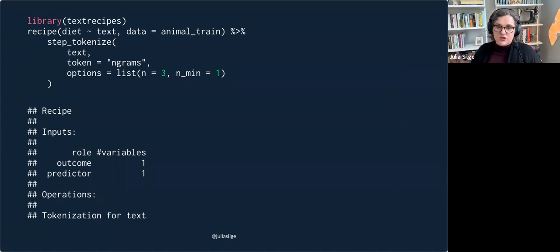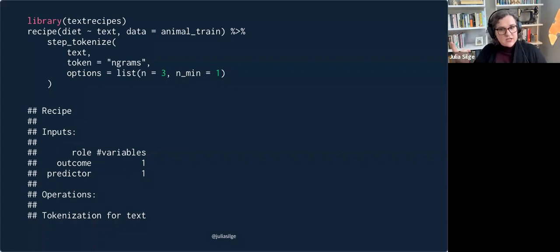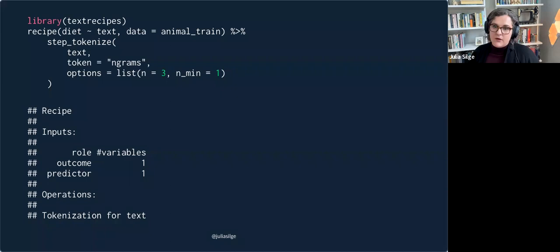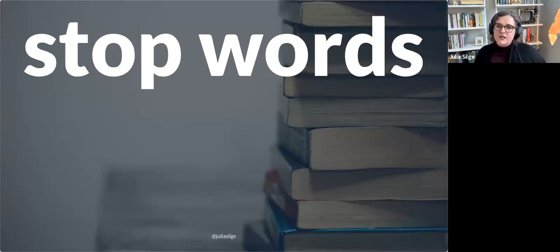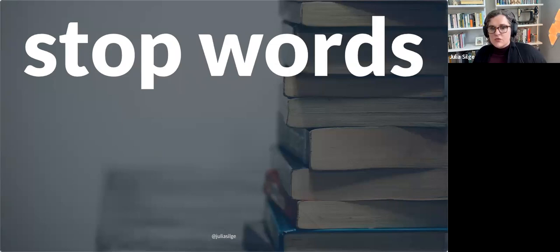In tidymodels, we collect all these kinds of tokenization decisions in code using a recipe. We start with a recipe that specifies what variables we'll use, then define pre-processing steps. This example tokenizes using n-grams of one, two, and three — that is, unigrams, bigrams, and trigrams. Even at this first, most basic step, the choices we make about tokenization affect our modeling results in a big way.